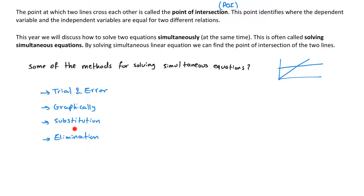These three methods will all work for more challenging problems, whereas trial and error is easier when you have simpler numbers. But when the numbers are very large — for example if your point of intersection was 1,723,000,000,000 — it would be much more challenging using trial and error, whereas the algebraic methods are actually much easier to use.